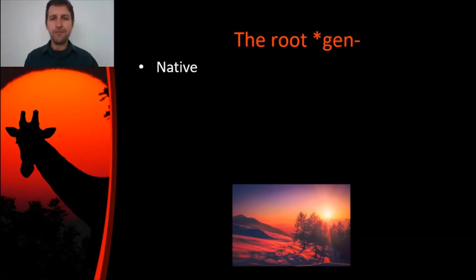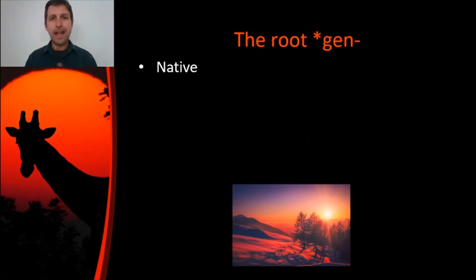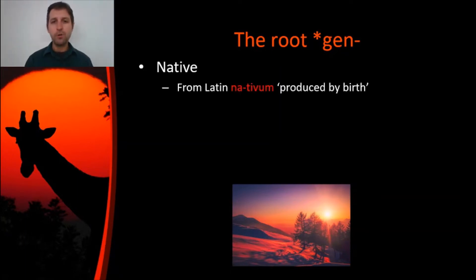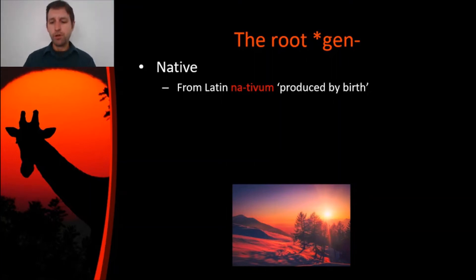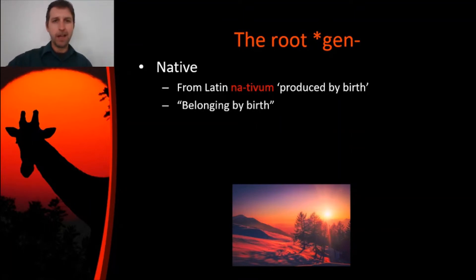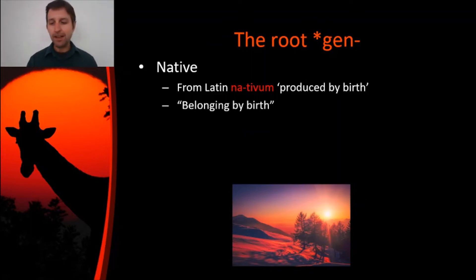What about a word like native? You might be wondering — native doesn't look like the Gen root; it has an N, but other than that, it doesn't really look the same. This also comes from the form of the root in Latin that was gna. In co-gnatum, the G survives, but when it was at the beginning of a word, the G would fall off because it was hard to say gna-, and they usually just said na-. This comes from Latin nativum, which means produced by birth. Today when we use the word native, we mean belonging by birth — if you're native to somewhere, that's where you and your ancestors were born. If there's talent that is native to you, it's in you from birth.